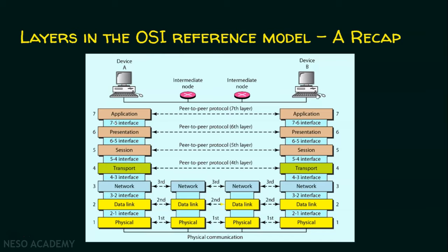If two systems are going to communicate with each other, the user sitting at one computer is going to generate the data. How does he generate the data? He normally opens an application, and that application is going to generate the data. So this is what the application layer is. The data generated by this application must reach the destination computer's application layer. Before sending this data, the application layer data is given to the presentation layer, session layer,